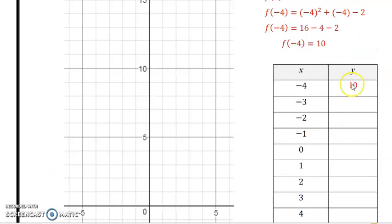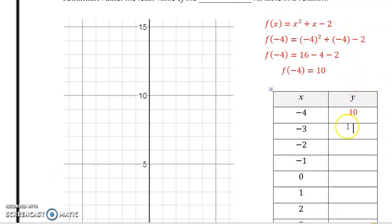So you continue to do that. I like this with mental math strategies. Plug this in. Negative 3 squared is 9. 9 - 3 is 6, and 6 - 2 is 4. You put in negative 2. Negative 2 squared is 4. 4 - 2 is 2. 2 - 2 is 0. Then put a negative 1 in. Negative 1 squared is 1. 1 - 1 is 0. 0 - 2 is negative 2. 0 squared plus 0 minus 2 is also negative 2.